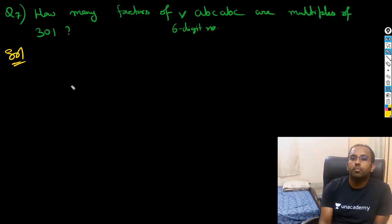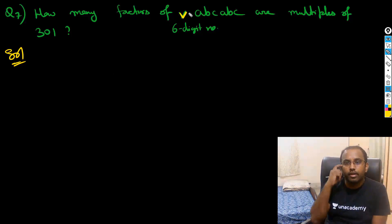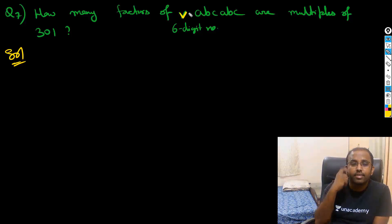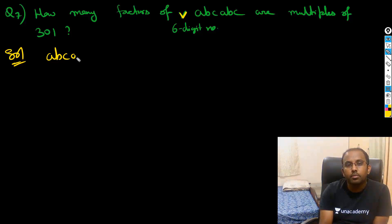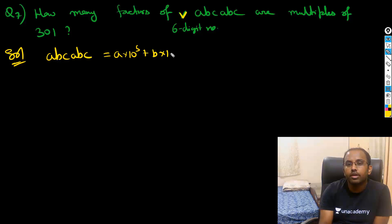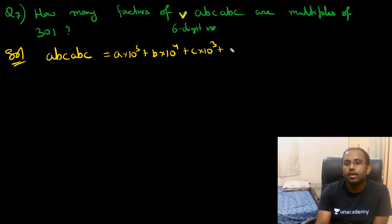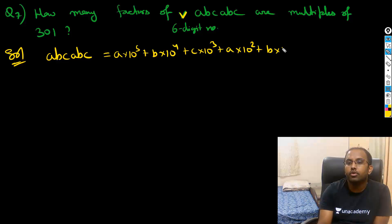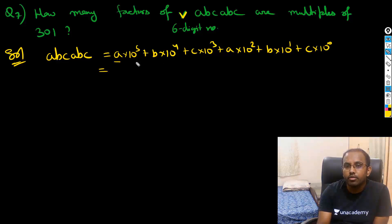I want factors that are multiples of 301. To do that, let's factorize abcabc. I can break it as: a×10⁵ + b×10⁴ + c×10³ + a×10² + b×10¹ + c×10⁰.